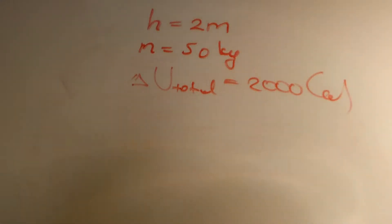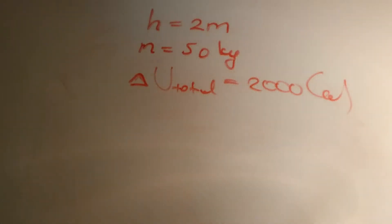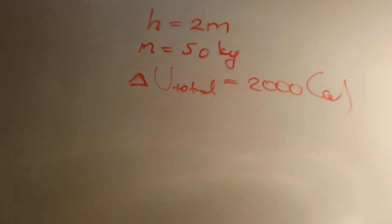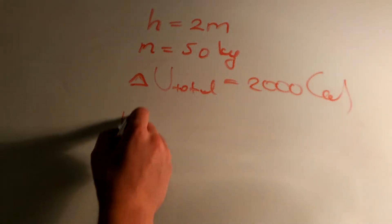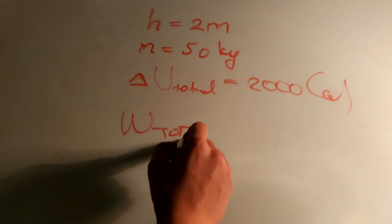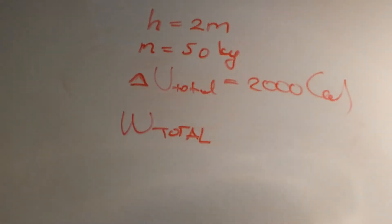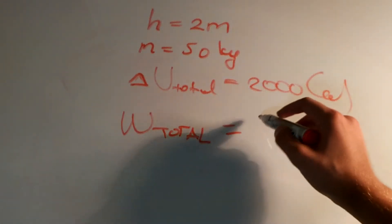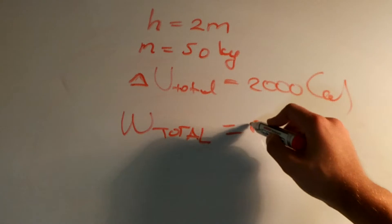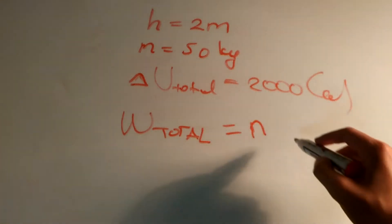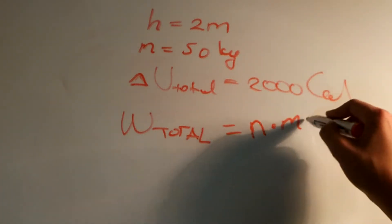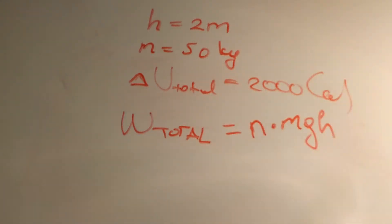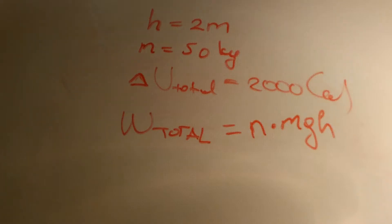Now we need to expel this much energy by doing work or by lifting the barbell. So we can say that the total work that will be needed to lift the barbell will be equal to n, the times that we are going to lift the barbell, times the mass times the gravitational acceleration, then times the height for which we are going to lift it.